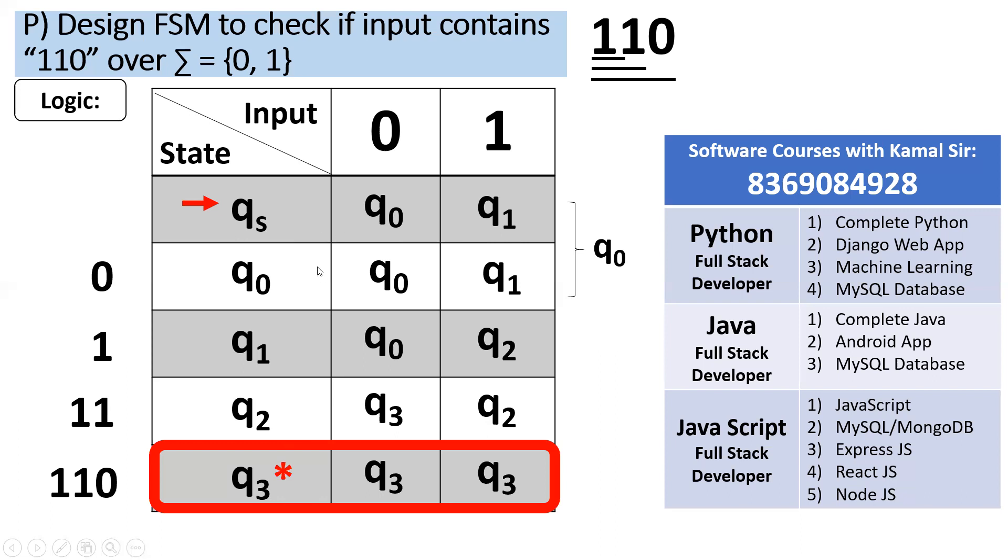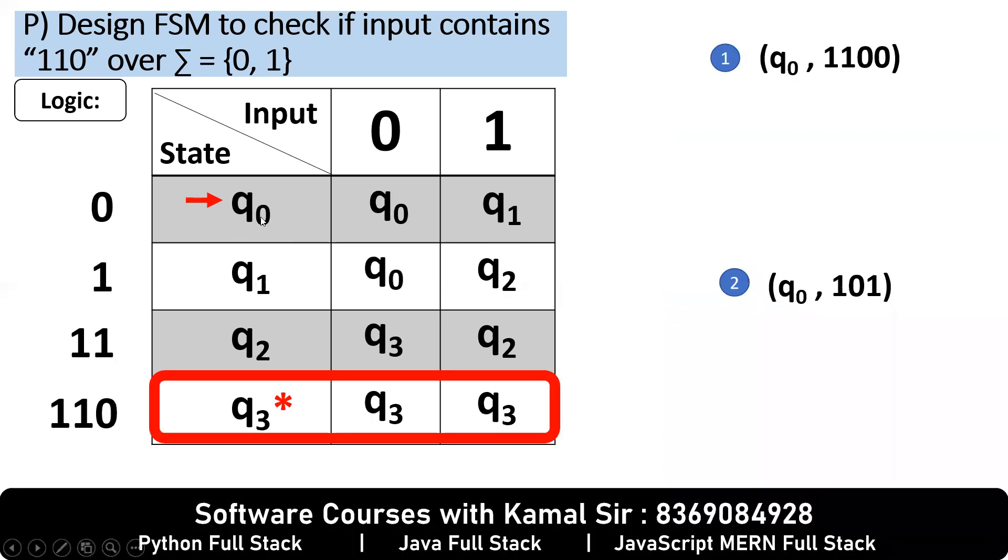Both have the same transition. And these two are non-final. Final can go with final, non-final can go with non-final. So when we implement, Q0 is the start state.